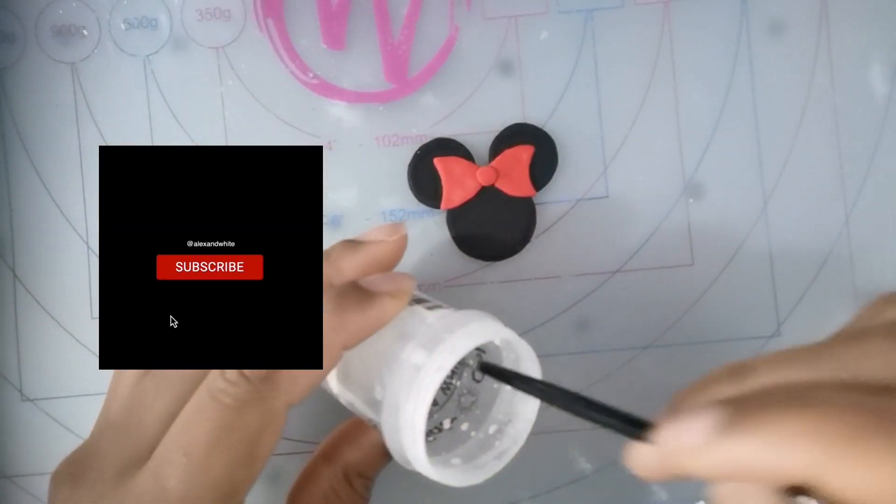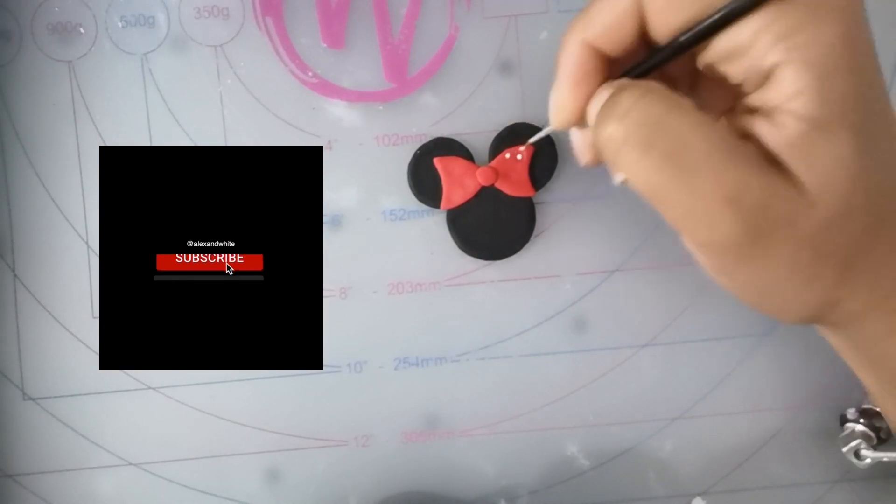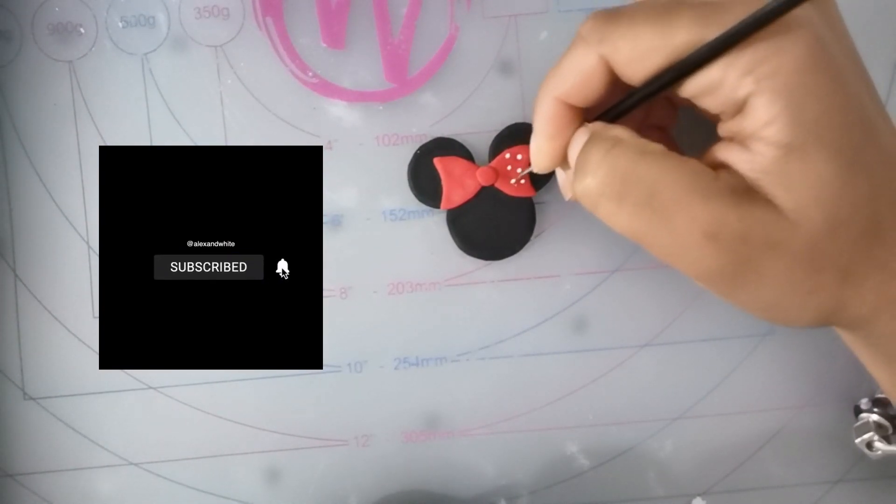Now I'm using some extra white gel paste and a tiny paintbrush just to make dots on the bow.